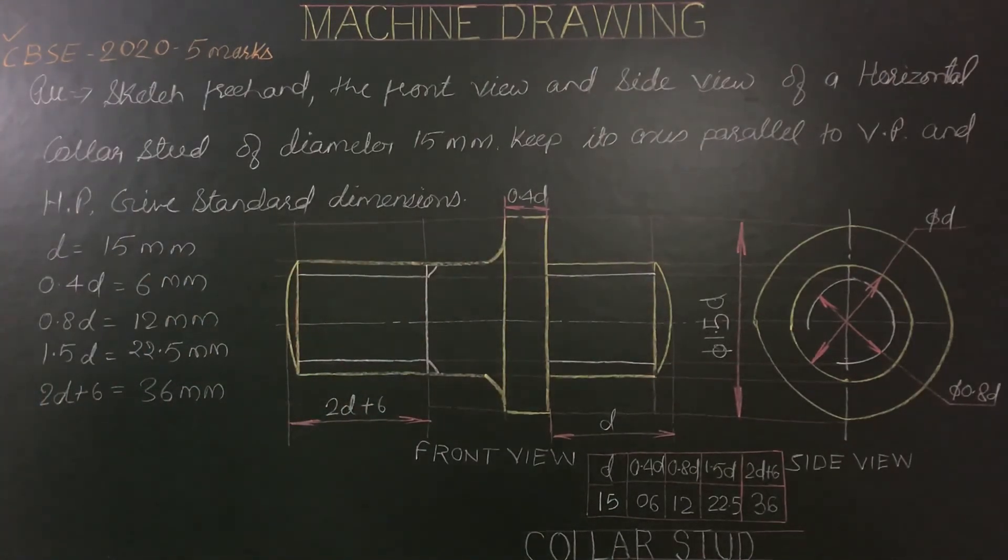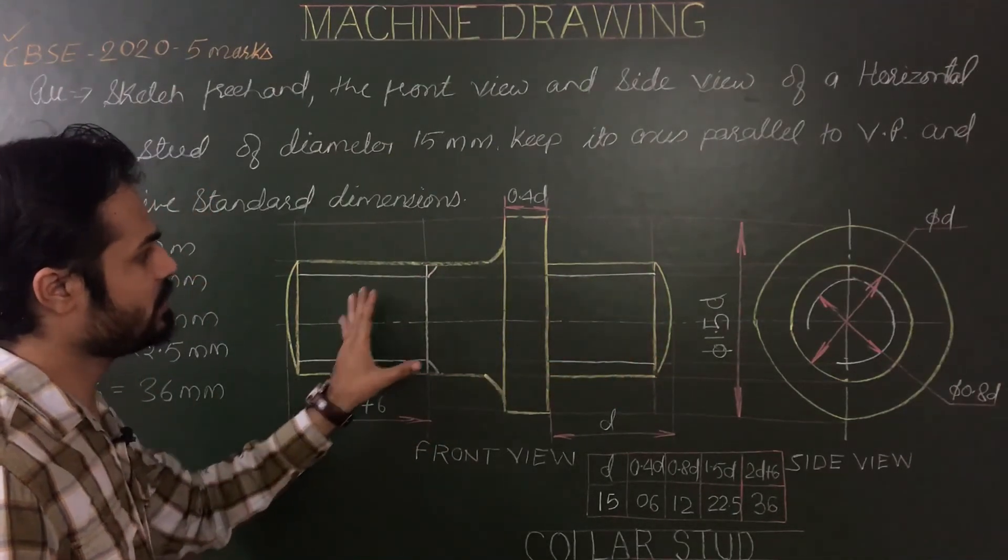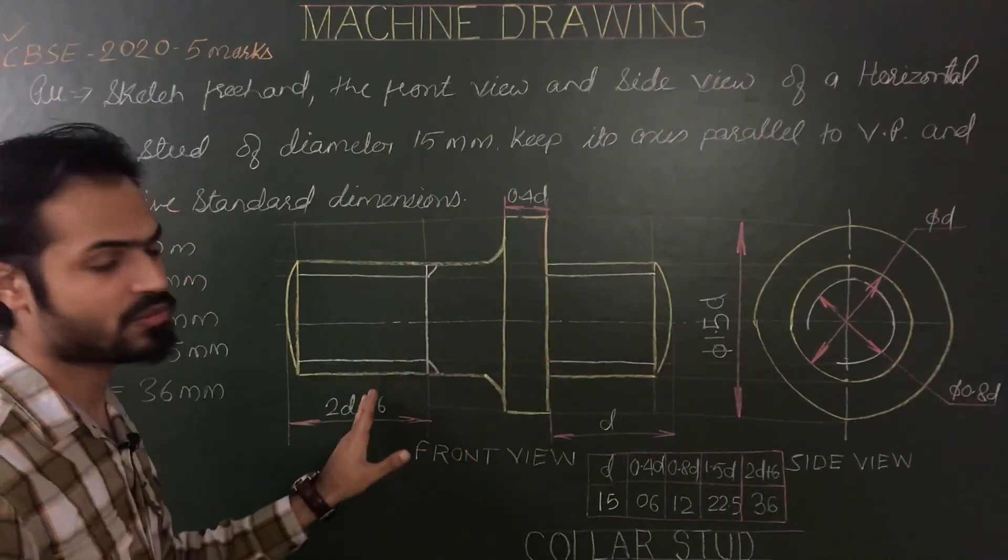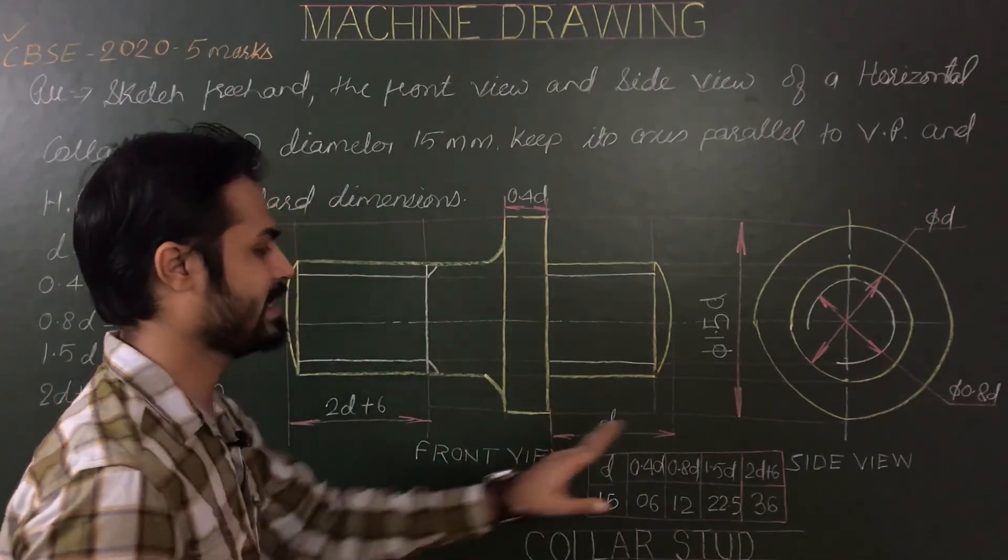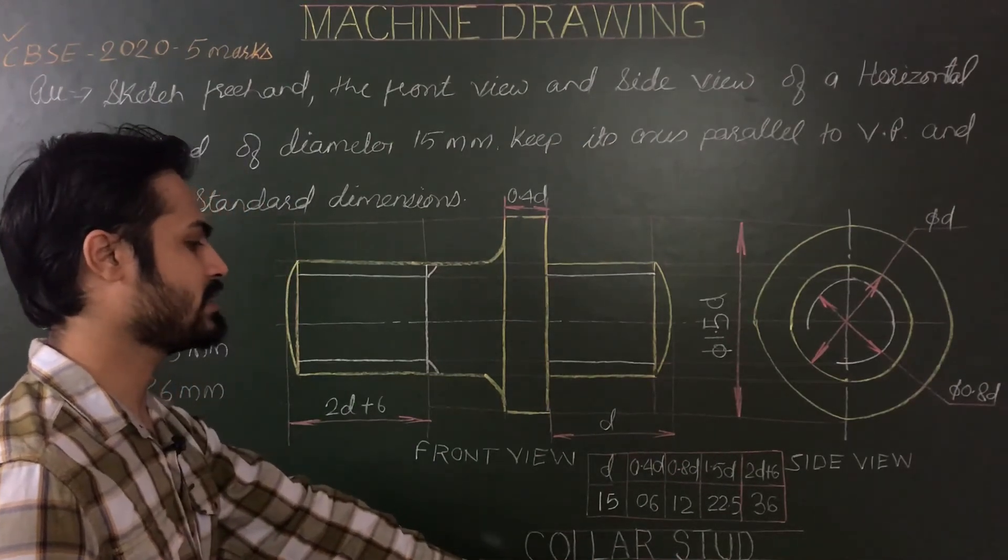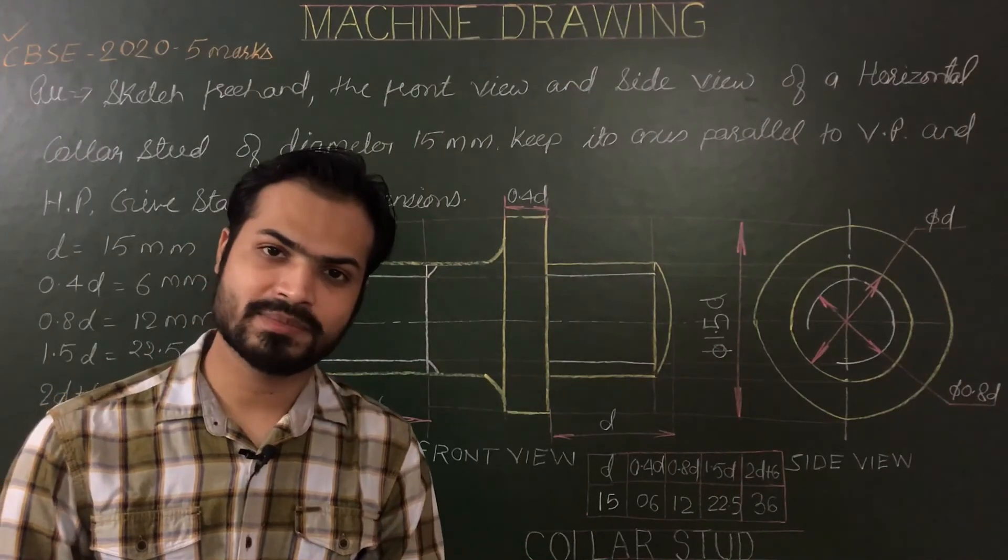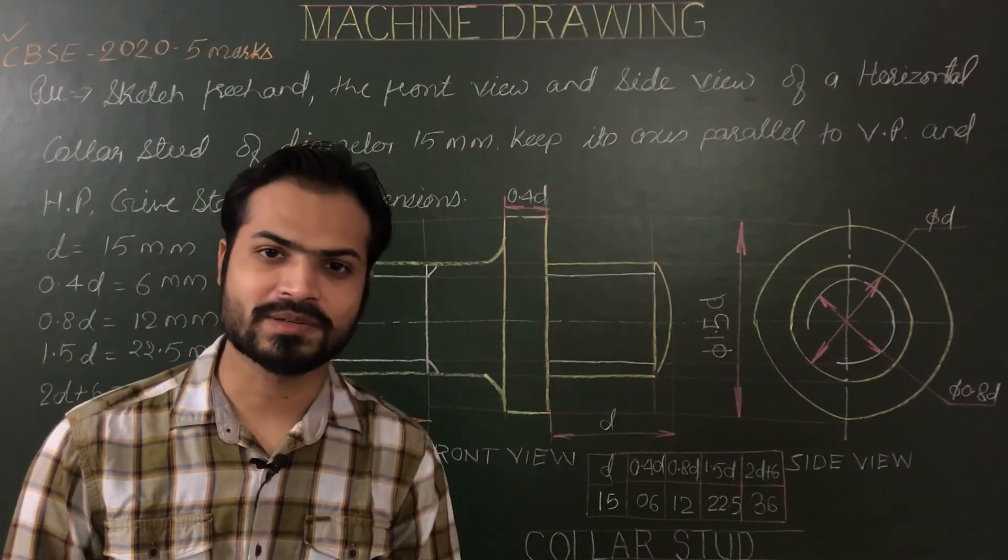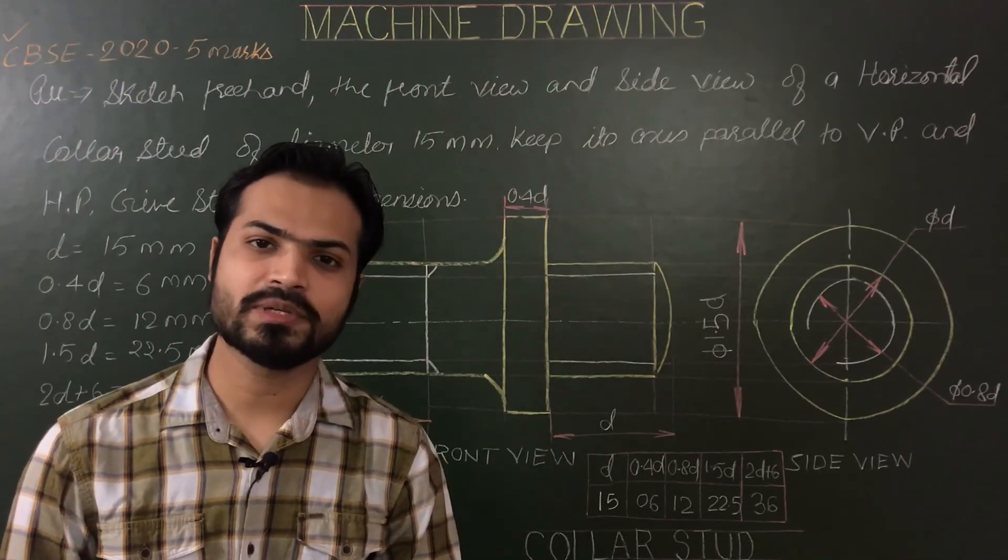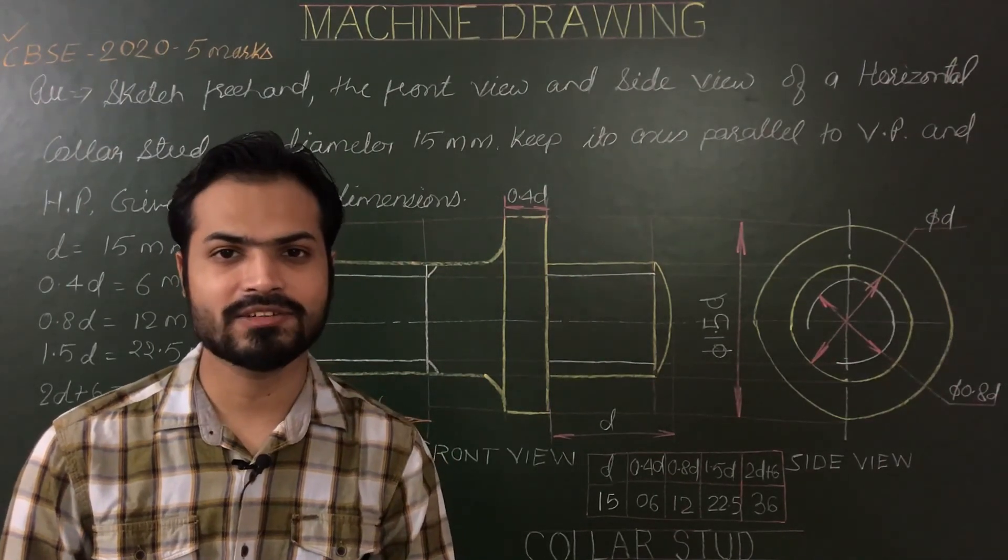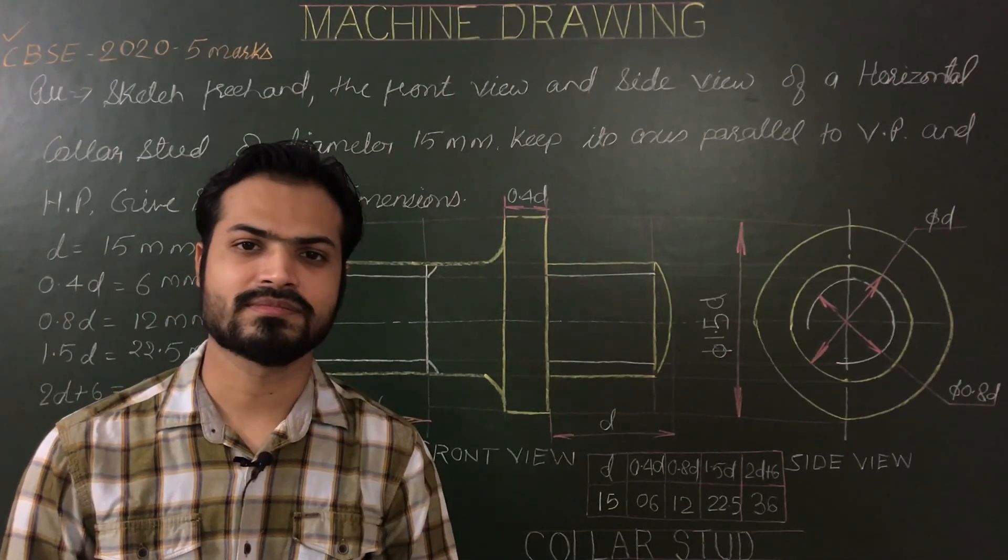So this is all from my side. Please draw this problem on your sheet. Start from its side view, then project front view, then do proper dimensioning. Use proper pencil, show all dimensions in standard dimensioning box, write headings and main heading collar stud. Please don't use any instrument for measurement or for construction work. If you have any doubt or any problem in this topic or in any topic of machine drawing or engineering drawing, please write your comments in the comment box. Thank you.